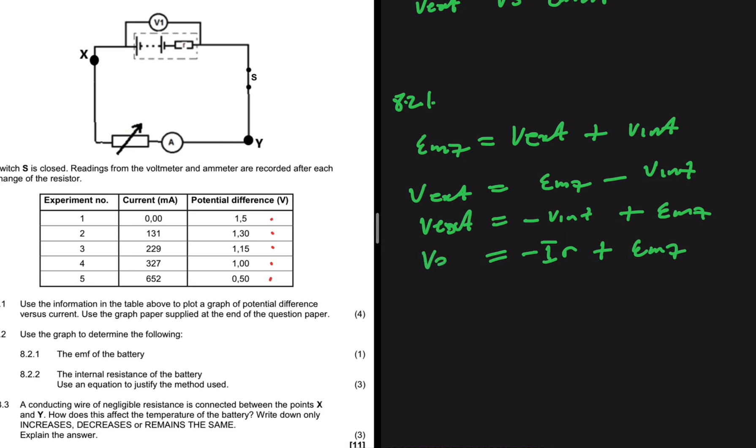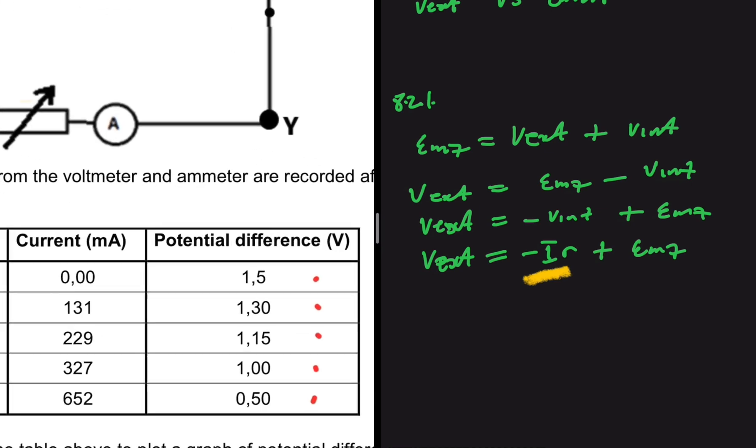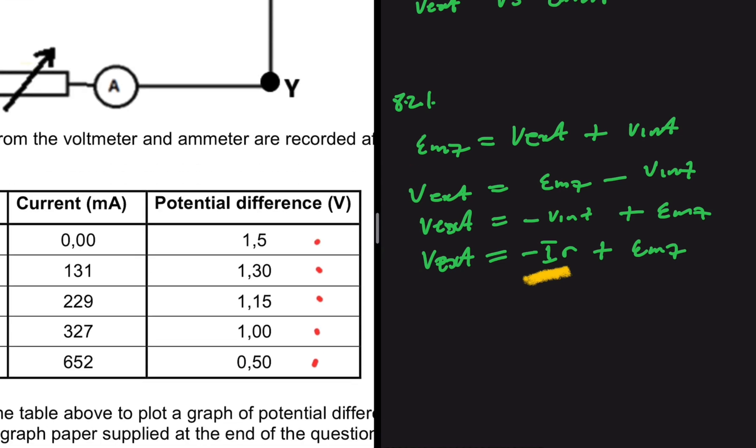Now you can see the equation we have for the graph. It will be easy to determine the emf and the internal resistance. Let's start with the emf. You can see from the equation that when the current equals zero, V external equals emf. So if you come to your graph when the current equals zero, V external will be your emf. We can go ahead and say that emf equals 1.5 volts.